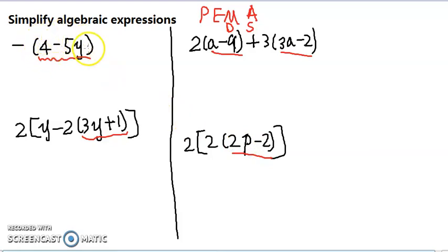That means we have to add or subtract them. But in order to add or subtract, we must have like terms. And notice that we don't have like terms for any of them. See, 4 and 5y, they're not like terms. 3y plus 1, not like terms. a minus 9, not like terms. 3a minus 2, not like terms. And 2p minus 2, not like terms. So that means there's nothing we can do inside the parentheses. Nothing to do inside the parentheses.